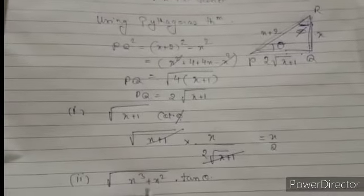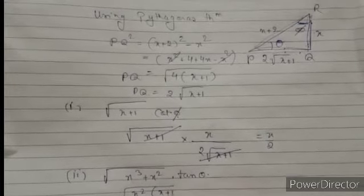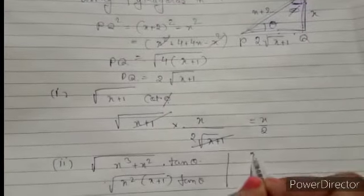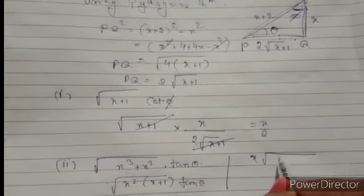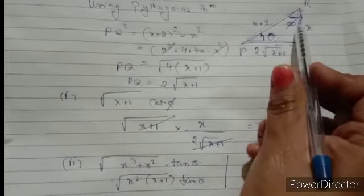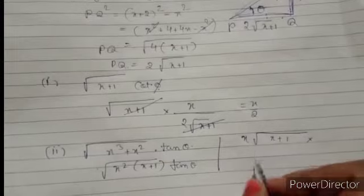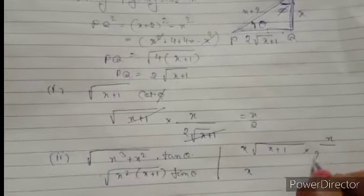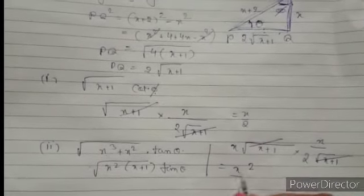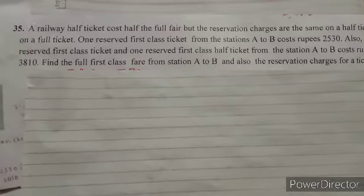Now the second part: find √(x³+x²)·tan θ. First simplify √(x³+x²) — take x² common to get √(x²(x+1)) = x√(x+1). Then tan θ: angle θ is at vertex P, so perpendicular is x and base is 2√(x+1). tan θ = perpendicular/base = x / 2√(x+1). Multiplying: x√(x+1) × x/2√(x+1). The √(x+1) cancels, giving x²/2. So the answer is x²/2.